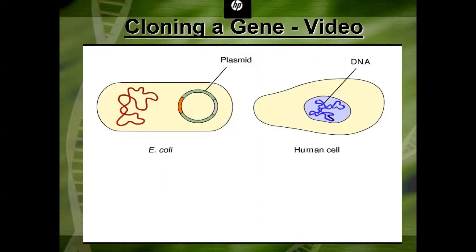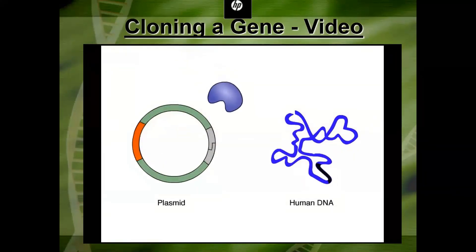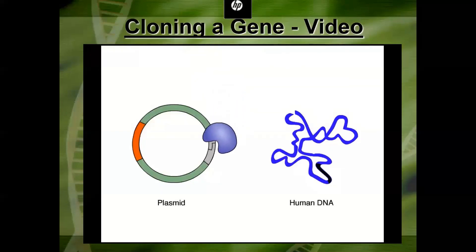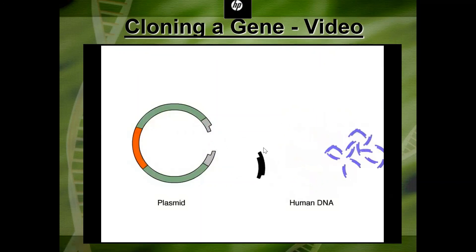Now let's watch a video that puts everything together — the steps of cloning a gene incorporating the restriction enzyme cutting the plasmid and the human DNA. From the video: we can use DNA technology to recombine and copy genes. A restriction enzyme is used to cut open a plasmid — a small circular DNA molecule from a bacterium — which serves as a cloning vector. The restriction enzyme cuts only at a certain DNA base sequence called a restriction site. The same enzyme is used to cut DNA obtained from a human cell.